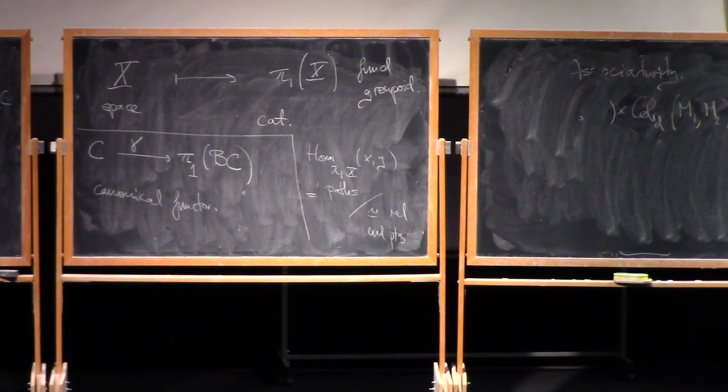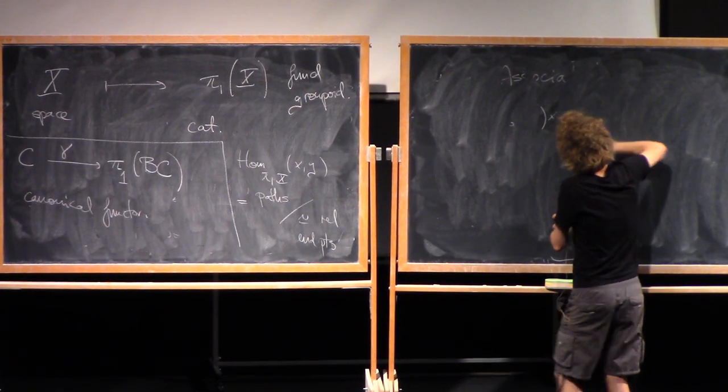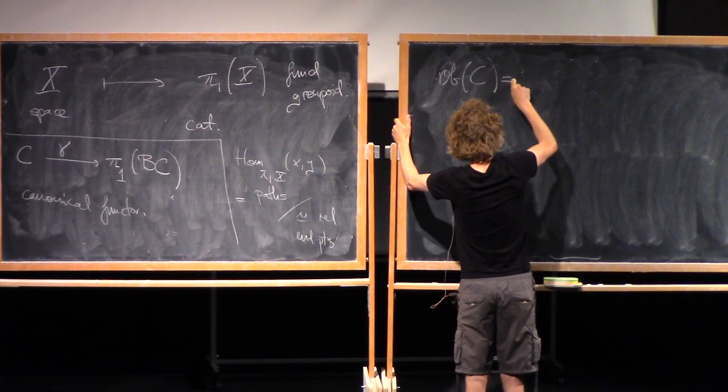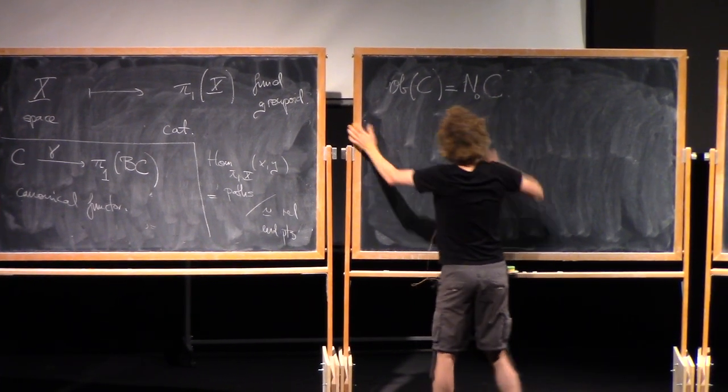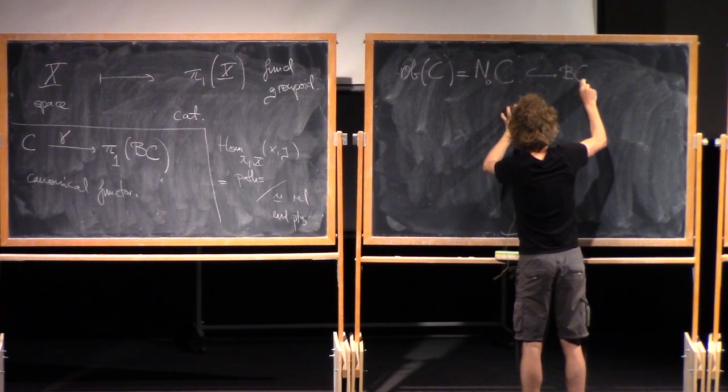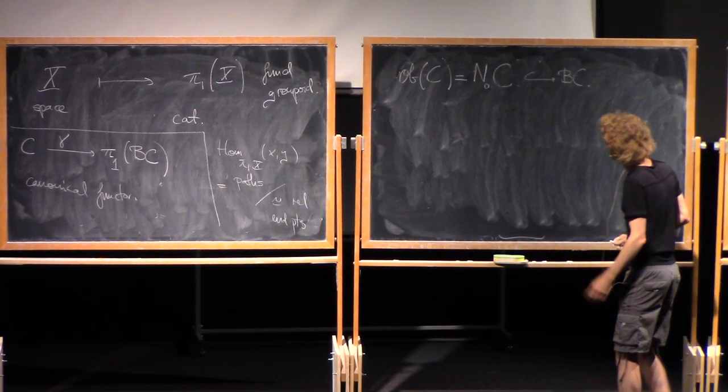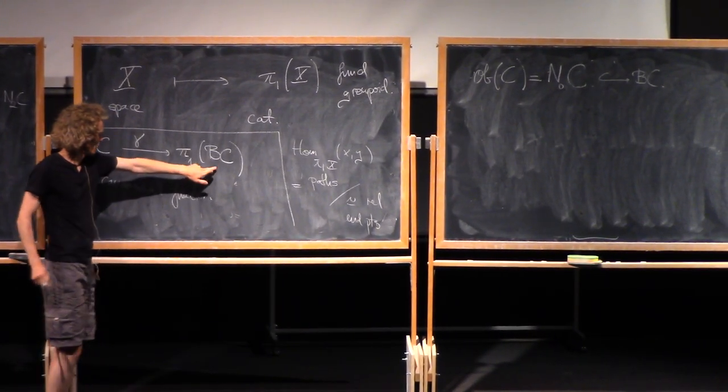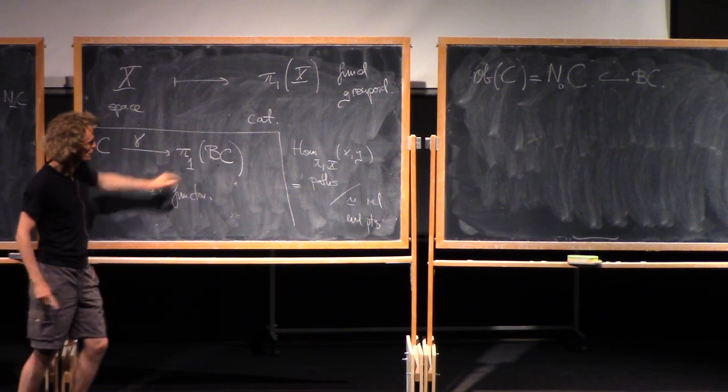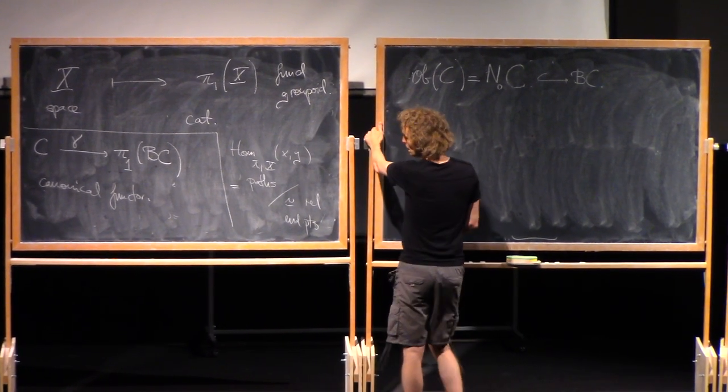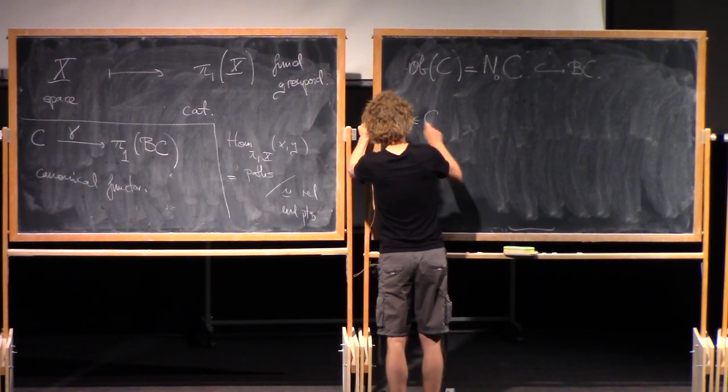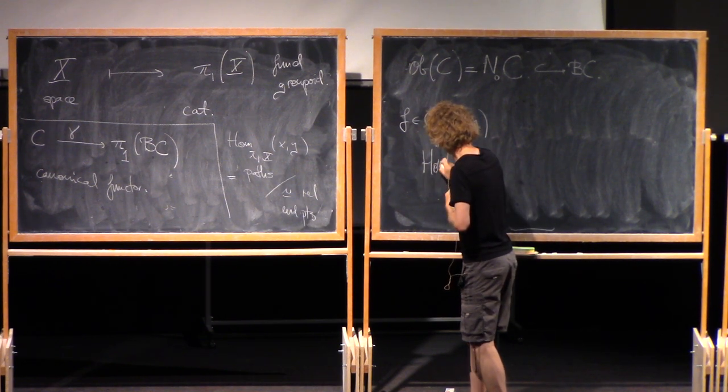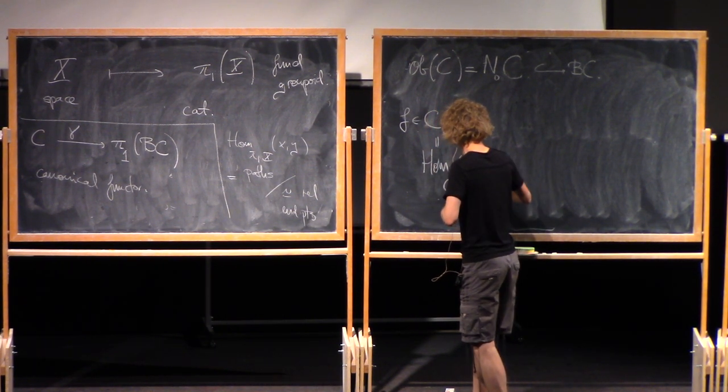So by definition of BC, it contains as a subspace the set of objects. So objects of C, by definition, is the zero simplices of BC. It sits inside as a discrete subspace. So that's what this function does on objects. Send an object there to the corresponding point in BC, regarded as an object in the fundamental groupoid. On morphisms, so we have F in C(x, y) - by the way, I'm using this notation to mean the hom set in C from x to y.